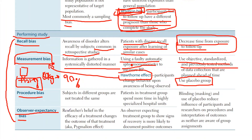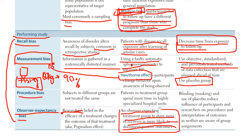Observer expectancy bias is when researchers put their own beliefs into what they expect the study will show. For example, if an observer expects the treatment group to show signs of recovery, they're more likely to document positive outcomes and be more lenient in scoring improvements.